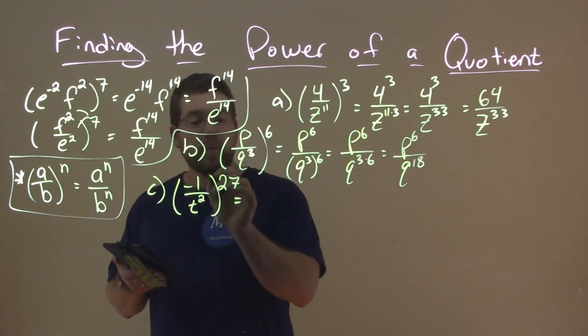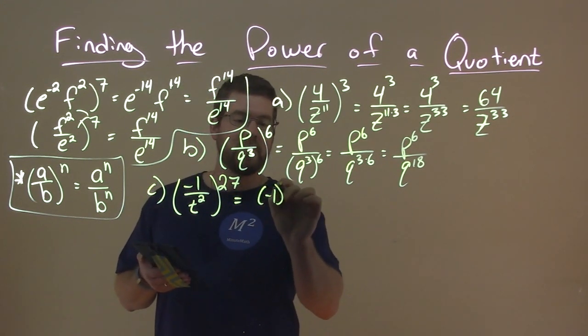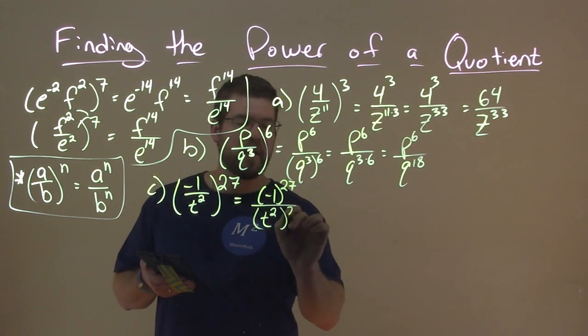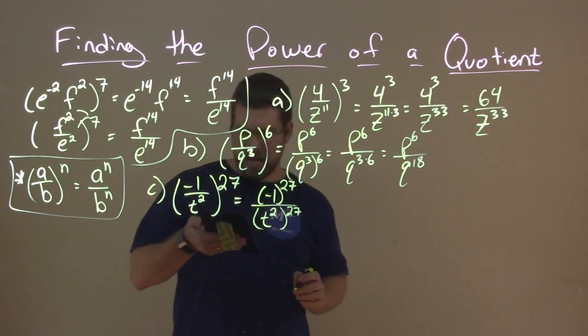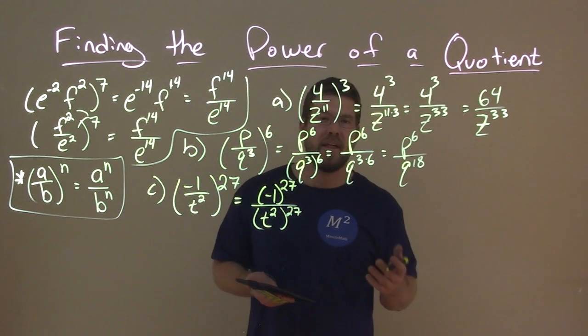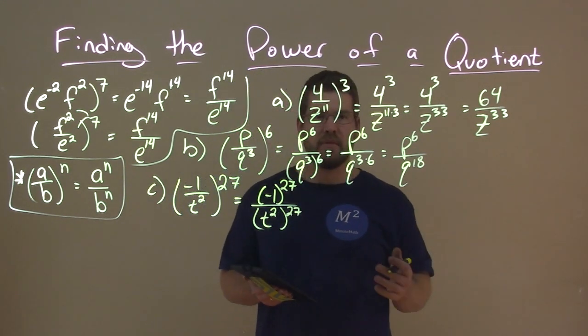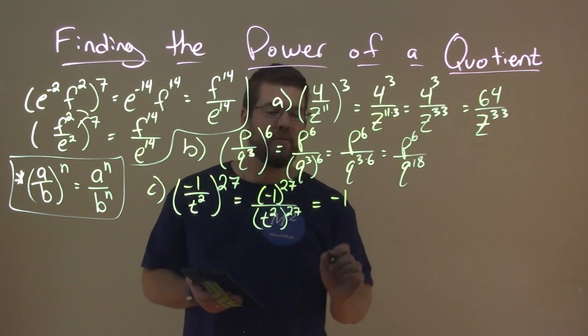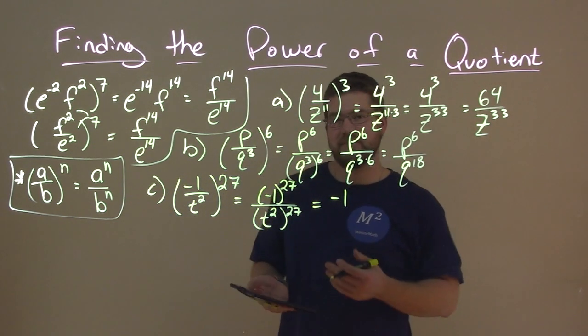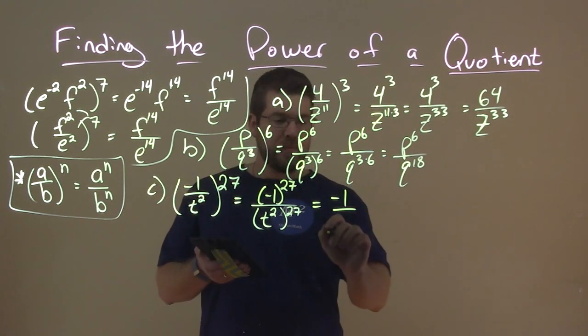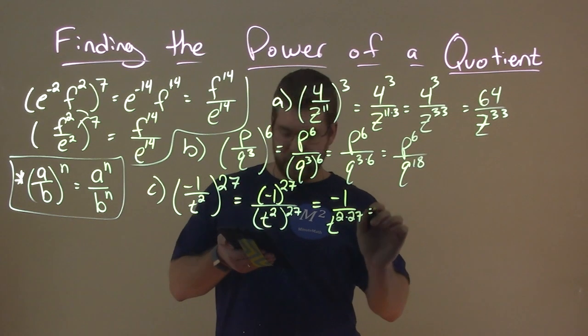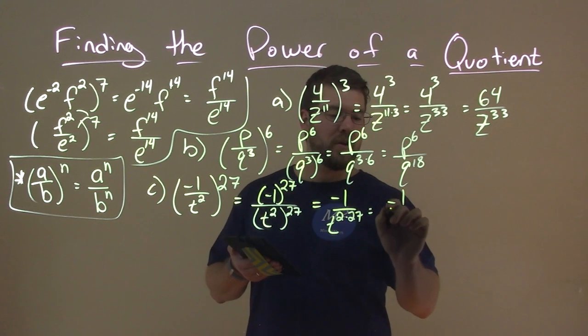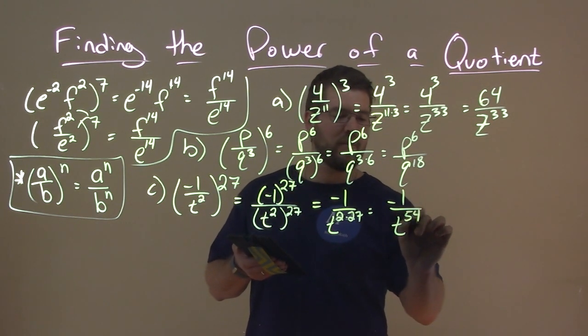So we're exponent, right? Numerator and denominator. So negative 1 to the 27th power over t squared to the 27th power. Well, negative 1 to the 27th power. That's negative 1 times itself 27 times. Since this is an odd power, it's still going to stay negative. And so we just have negative 1 here. Remember, 1 times itself is just 1, right? The denominator, that's t to the 2 times 27. And 2 times 27 is 54. So we have negative 1 over t to the 54th power.